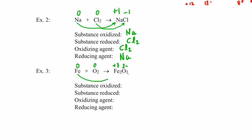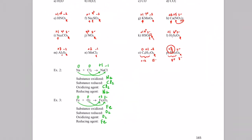Iron went from zero to positive three. To do that you have to lose electrons, so the substance oxidized was iron. Oxygen went from zero to negative two, so it had to gain electrons — the substance reduced was O₂. The oxidizing agent is the species that contains the element reduced, so that would be O₂, and the reducing agent is the species that contains the element oxidized, so that would be iron. Did you get all those right?